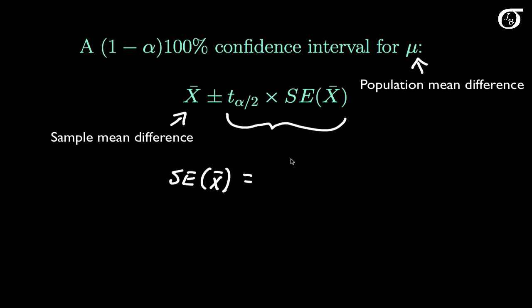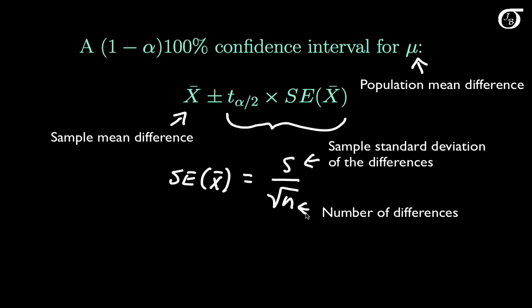And the standard error is our usual one-sample standard error for means. This is simply going to be s over the square root of n. s is the sample standard deviation of the differences, and n is the number of differences that we have.